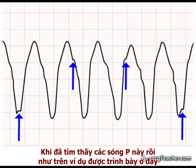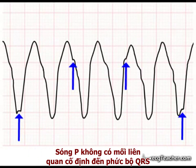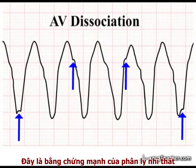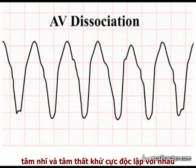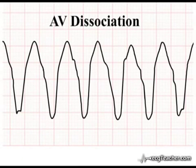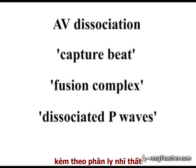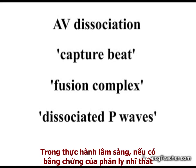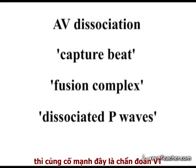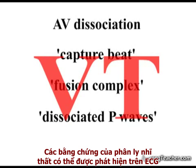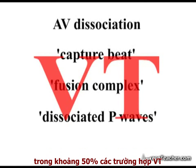When identifiable, as in the example shown here, the P waves bear no fixed relationship to the QRS complexes. This is strong evidence of AV dissociation — the atria and ventricles are depolarizing independently of one another. There are situations in which a supraventricular focus can generate a broad complex tachycardia with AV dissociation, but these situations are rare in practice. Evidence of AV dissociation in a broad complex tachycardia strongly favors a diagnosis of VT.